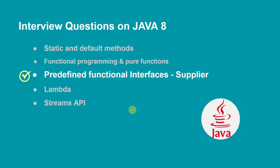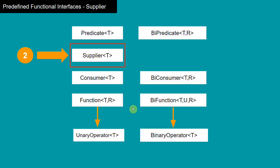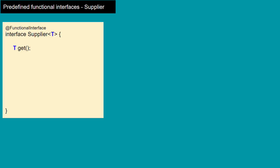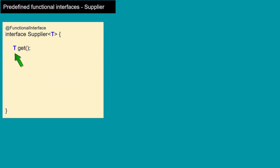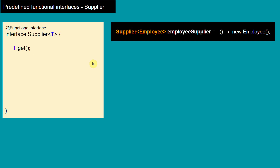We are looking at predefined functional interfaces, and in this video we are going to cover our second functional interface, which is Supplier. The Supplier functional interface has only one abstract method, and this method does not take any input argument but it returns any type of object. Supplier of T means it can return any type of object but does not need to take any input argument.